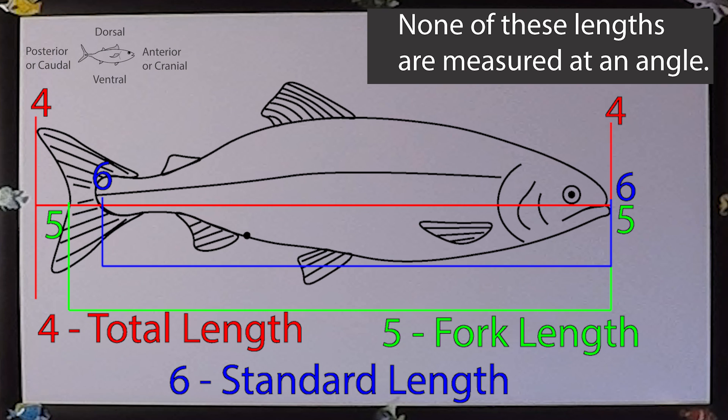Standard length. This measurement is taken from the most anterior part of the fish, to the most posterior part of the last hyperil bone of the caudal peduncle. This is found by bending the tail fin, and noting the crease. It's not too obvious on all species, and it's very unlikely that gaming officials will ask you for this measurement.